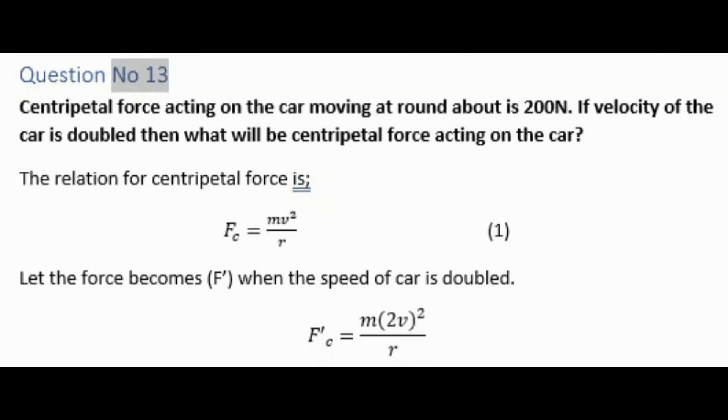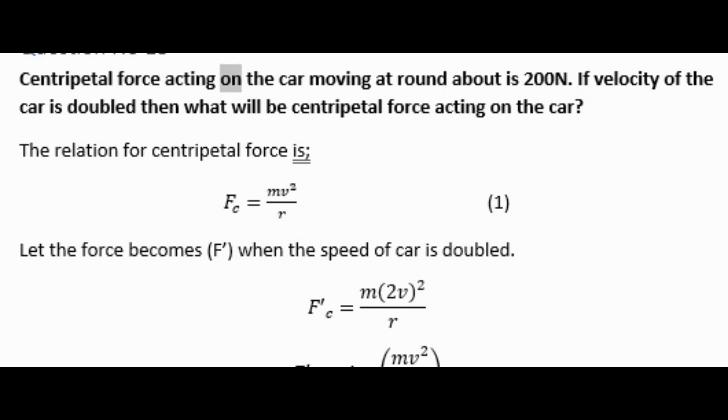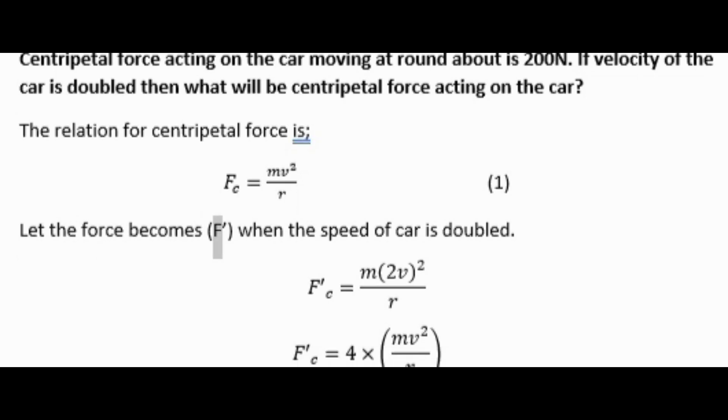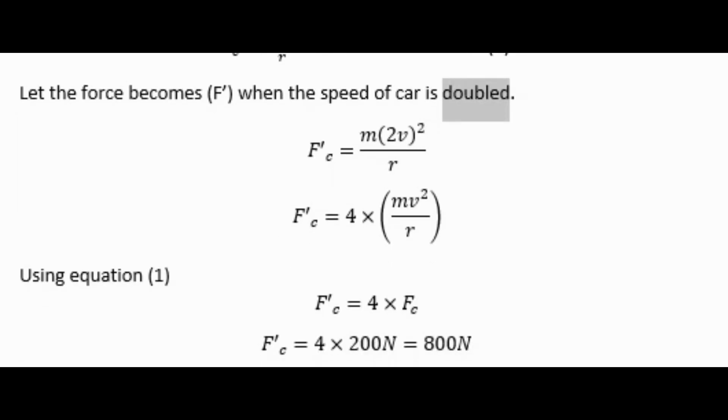Question number thirteen: Centripetal force acting on the car moving at roundabout is 200 N. If velocity of the car is doubled, then what will be centripetal force acting on the car? The relation for centripetal force is F_c = mv²/r. Let the force becomes F' when the speed of car is doubled.